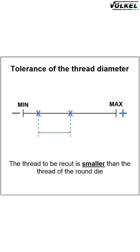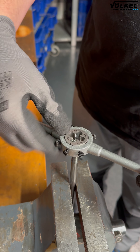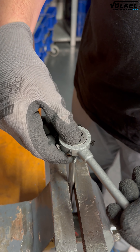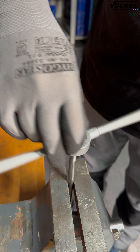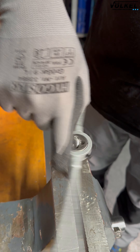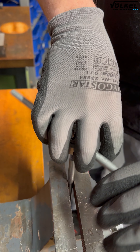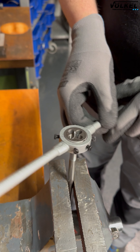For example, the thread to be recut may be smaller than the die, as shown in this diagram. In this case, the die can be screwed onto the thread to be recut very easily. There may even be a small gap between the two. The die will remove any severe thread defects, but there will be no significant chip removal during the recutting process.